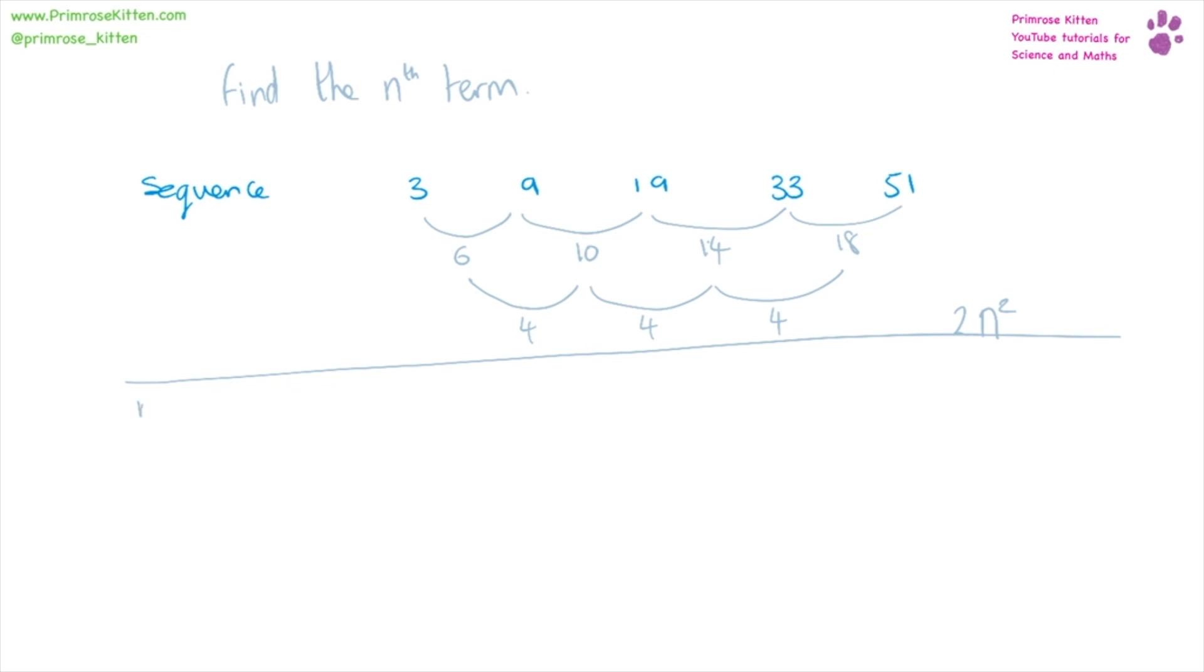So what I'm going to do is write our n numbers: 1, 2, 3, 4, 5. 2n squared, which is what we have worked out so far. So 1 squared is 1 times 2 gives us 2. 2 squared is 4 times 2 gives us 8. 3 squared is 9 times 2 gives us 18.